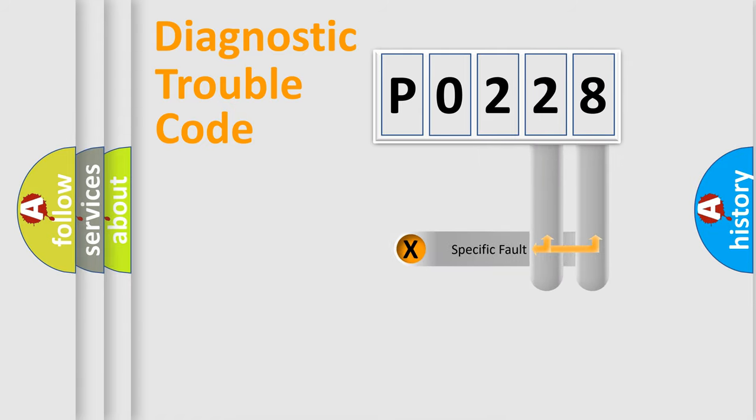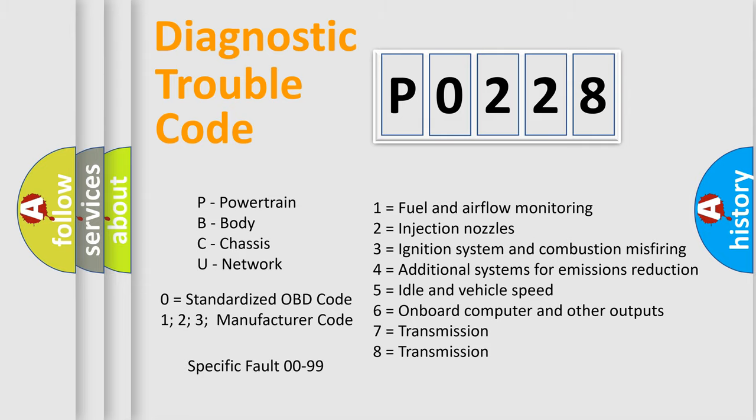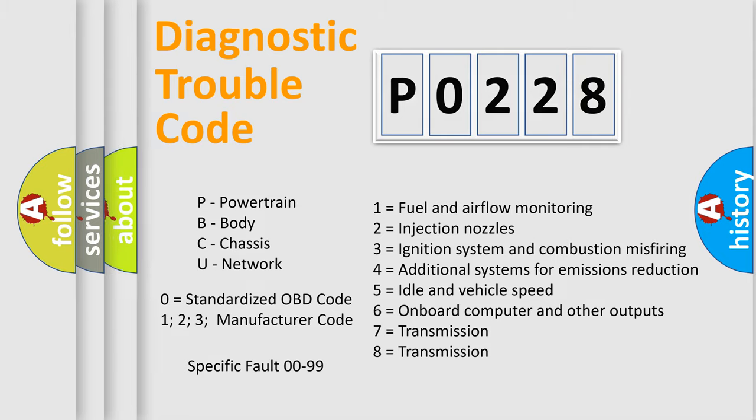Only the last two characters define the specific fault of the group. Let's not forget that such a division is valid only if the second character code is expressed by the number zero.